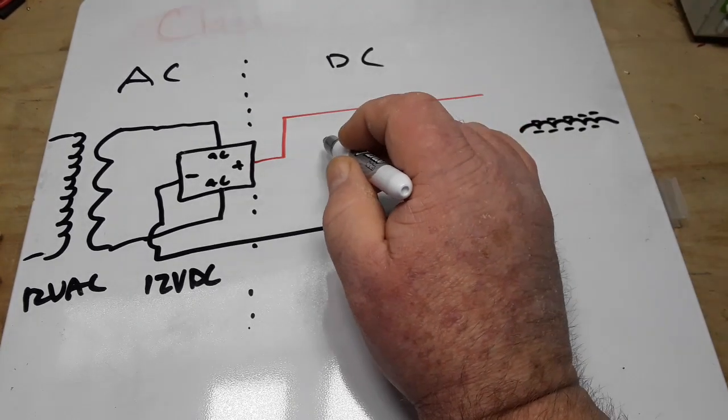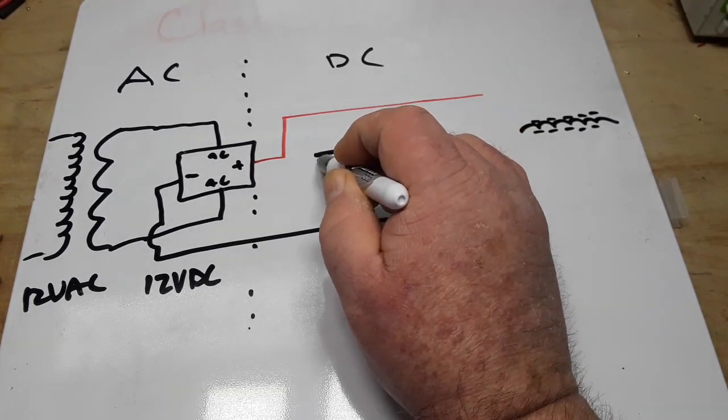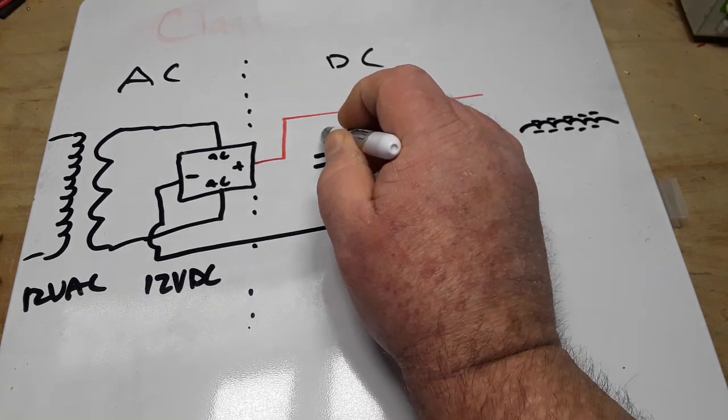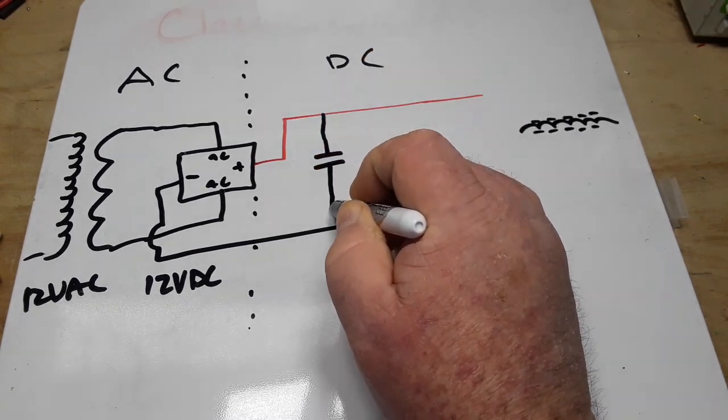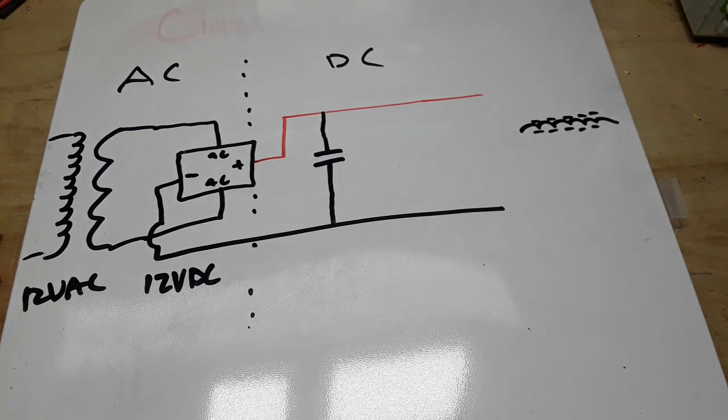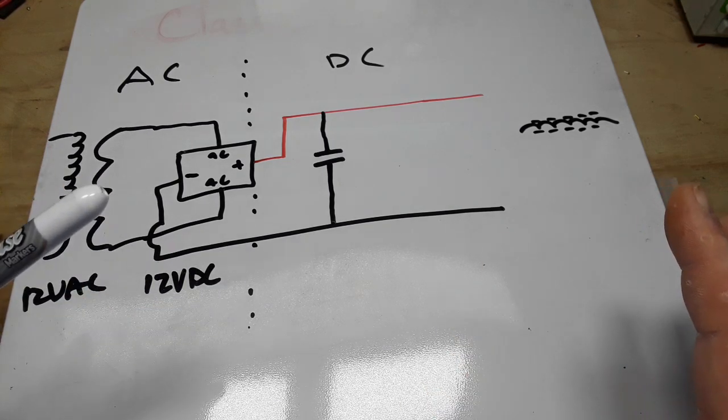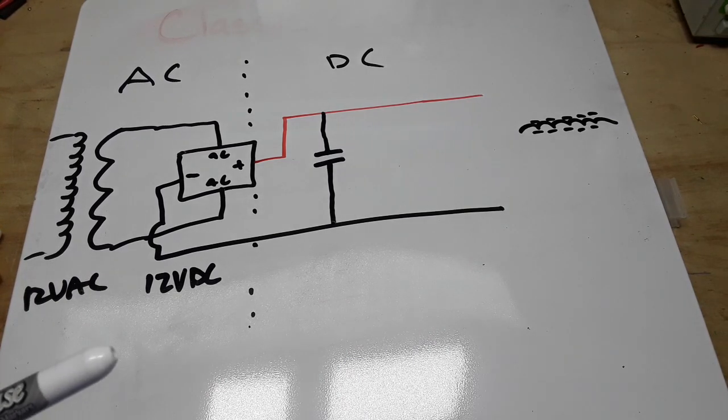And we want to eliminate that as much as possible. To do that, we're going to put in a smoothing capacitor, also known as a reservoir capacitor. But how are we going to determine the value for it? Well, it depends on your application. Just about everything is going to depend on your application.